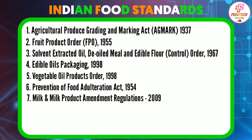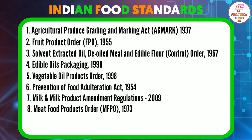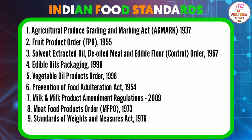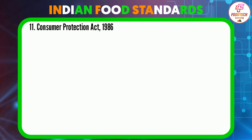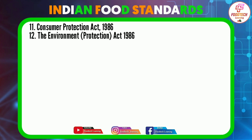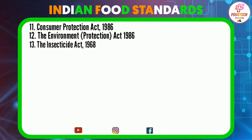The Prevention of Food Adulteration Act was passed in 1954. The Milk and Milk Products Amendment Regulations was passed in 2009. The Meat Food Products Order, known as MFPO, was passed in 1973. The Standards of Weights and Measures Act was passed in 1976. The Bureau of Indian Standards, known as BIS, was established in 1986.